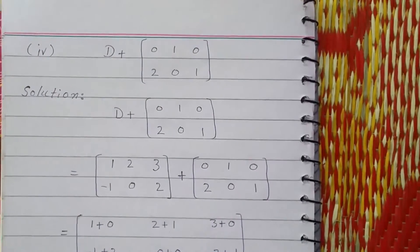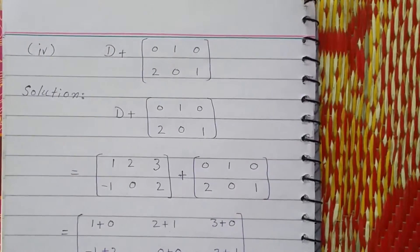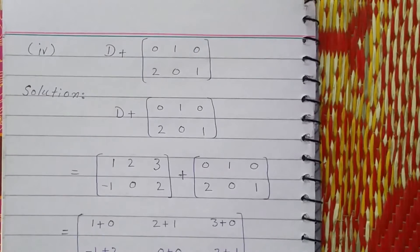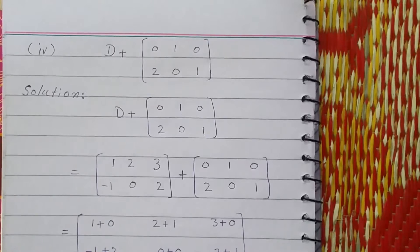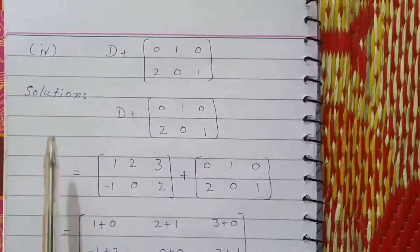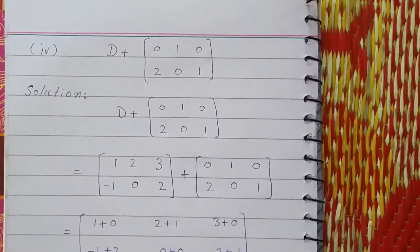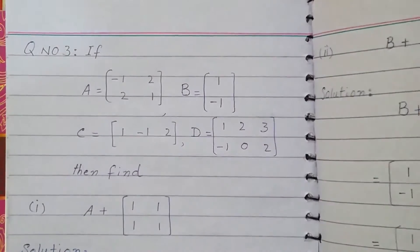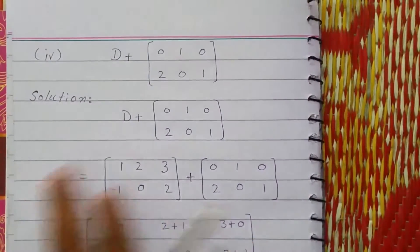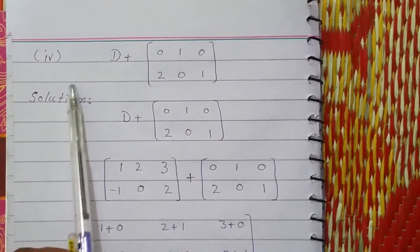Hello viewers, today we are starting our lecture 4 of Mathematics for Science Group 9th class. The unit we are discussing is 1, and this is question number 3, part 4.